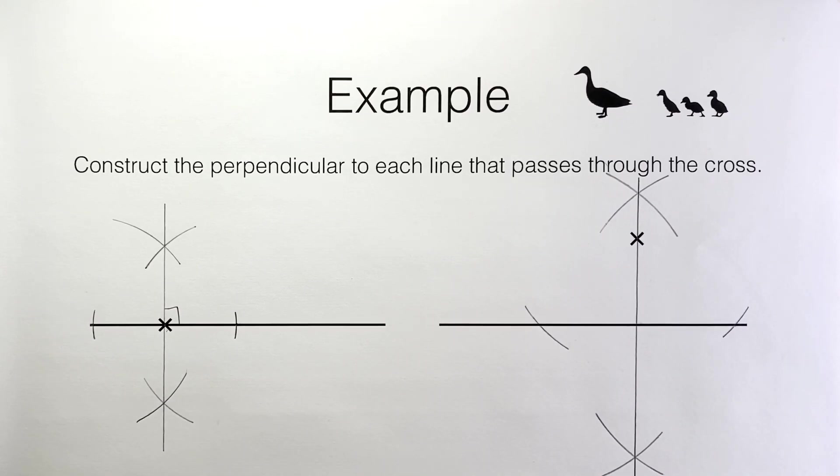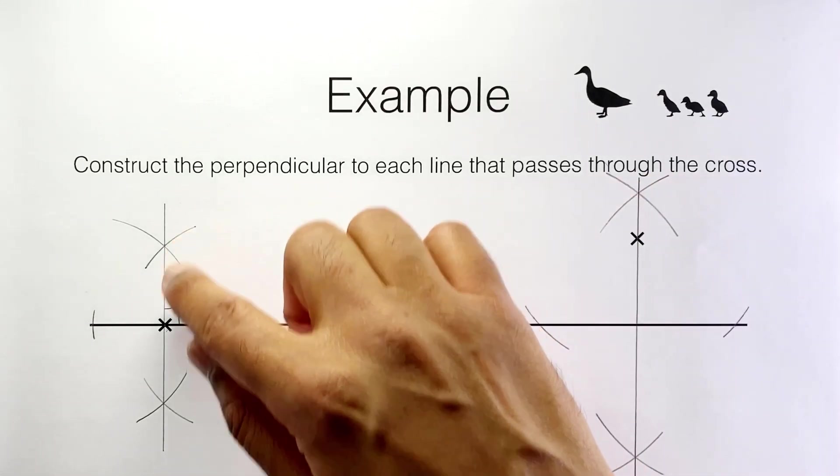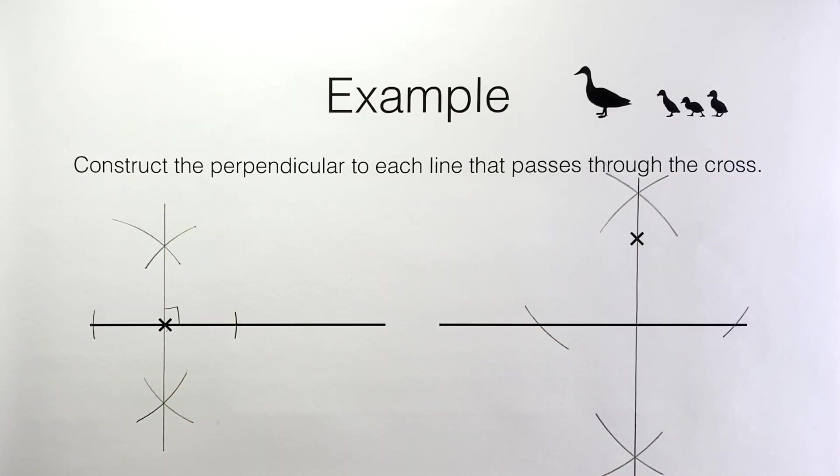As I've said in the earlier videos, when you're doing constructions always leave in your construction marks. Do not rub them out. They show the examiner that you know what you're doing and that you really did this using just compasses and straight edge and that you didn't cheat by using a protractor.